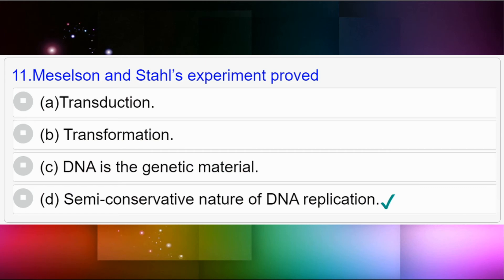Question number eleven: Meselson and Stahl's experiment proved — option A: transduction; option B: transformation; option C: DNA is the genetic material; option D: semi-conservative nature of DNA replication. Answer to question number eleven is option D: semi-conservative nature of DNA replication.